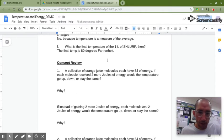Concept review. We have a collection of orange juice molecules, each has five joules of energy. If each molecule received two more joules of energy, would the temperature go up, down, or stay the same? And actually, it can help if you sketch this out, kind of like the little pictures that I had there. Let me get some dry erase.